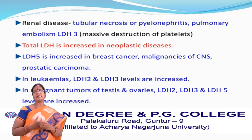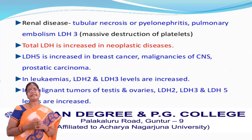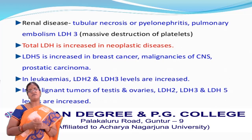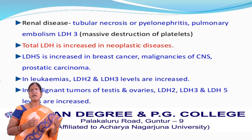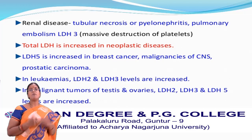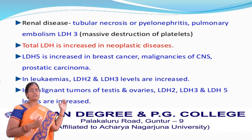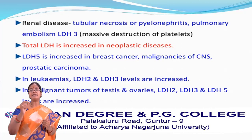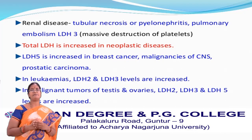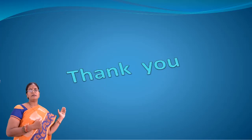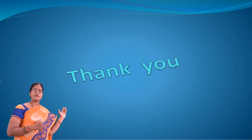LDH2 and LDH3 levels are increased to a great extent in leukemias. In germ cell tumors of testes and ovaries, LDH2, LDH3, and LDH5 levels are increased to a great extent. This is about isoenzymes of lactate dehydrogenase.